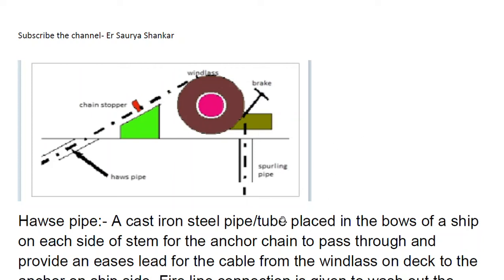In this video we are going to discuss two important terms that are often asked in marine exams: hawse pipe and spurling pipe. The definitions are very simple but very important. Here in the diagram you can see the windlass, the brake for the windlass, the chain stopper, and here is where you find the spurling pipe and the hawse pipe.